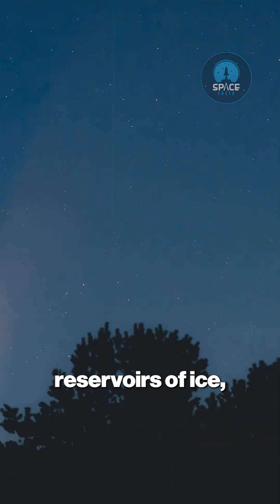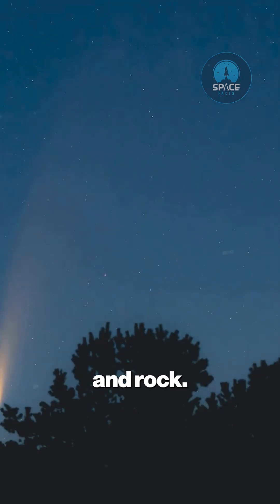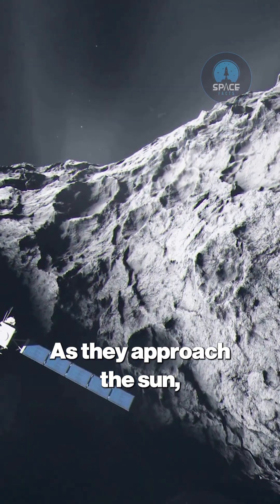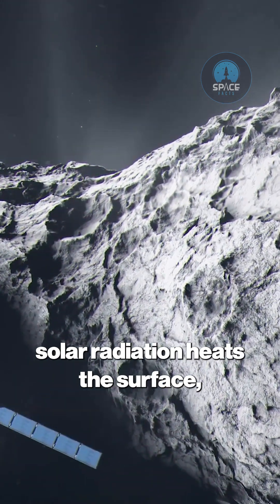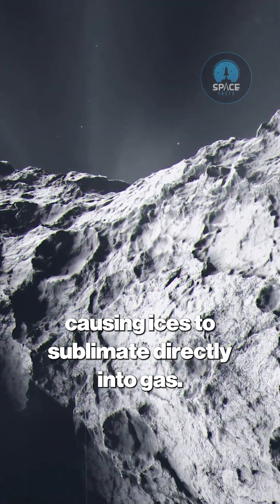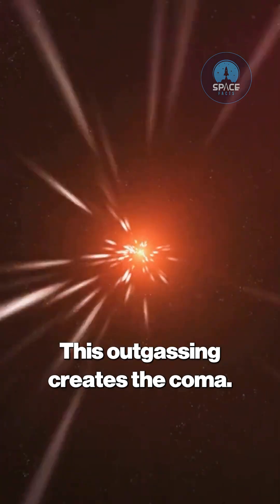Comets are essentially deep frozen reservoirs of ice, dust, and rock. As they approach the sun, solar radiation heats the surface, causing ices to sublimate directly into gas. This outgassing creates the coma.